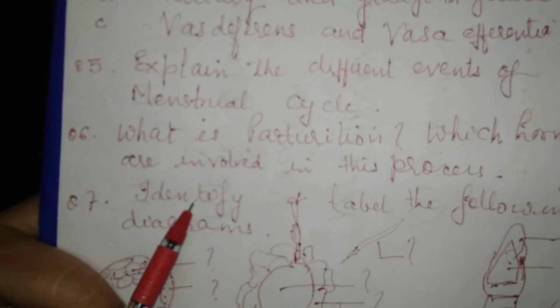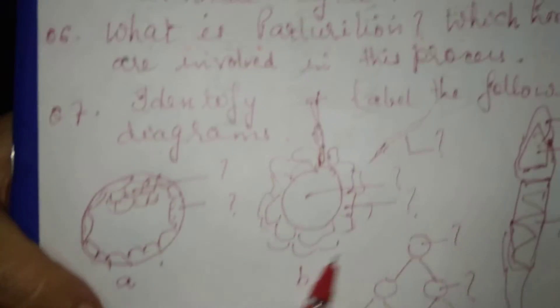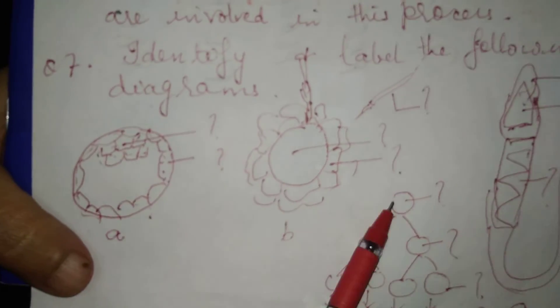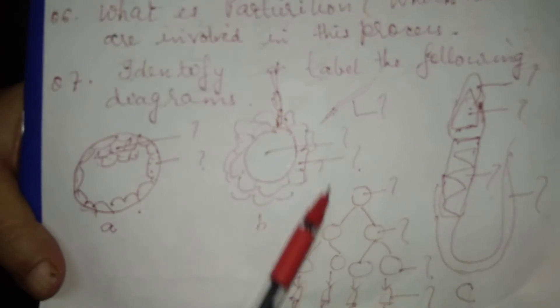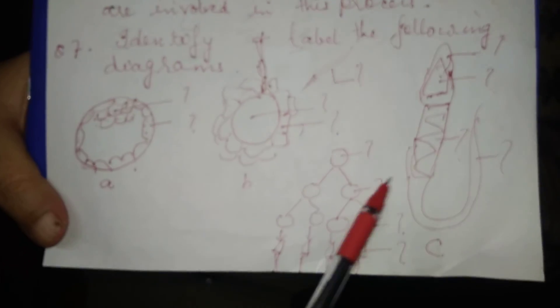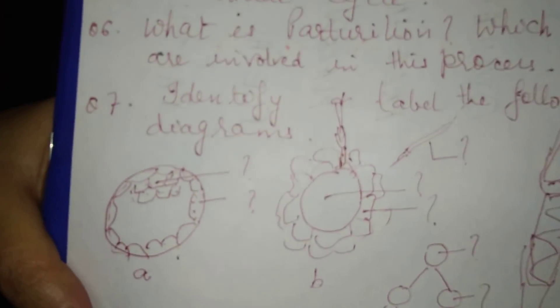Then I have drawn certain diagrams. There are four diagrams and you have to identify each of these diagrams and then label the parts as well. So today we have done the assignments of chapter 3.